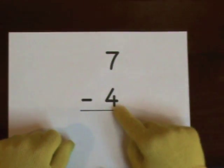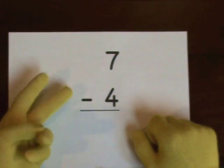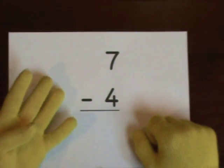7 minus 4. Start at 7. Do 4 on our fingers. 1, 2, 3, 4. That's how many we'll take away.